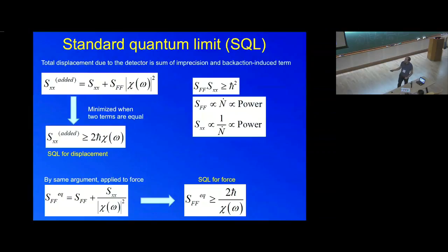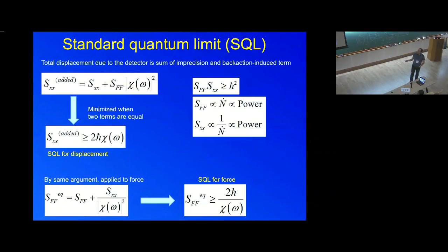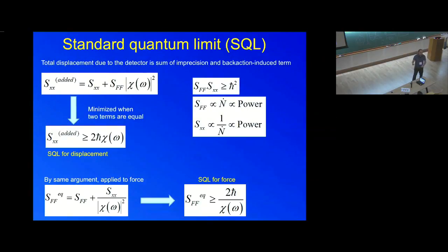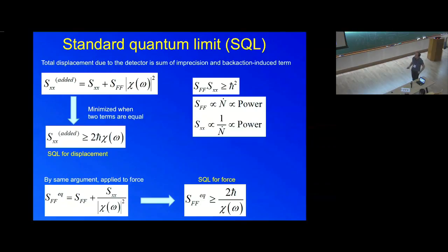For measuring small displacement, you want something very rigid — low susceptibility. This is what happens in gravitational wave detectors, where they want something as rigid as possible with a large mass. In the evolution of interferometric detectors, they are going towards larger and larger test masses — now something like 40 kilograms — while initial LIGO test masses were much smaller, of order kilograms.